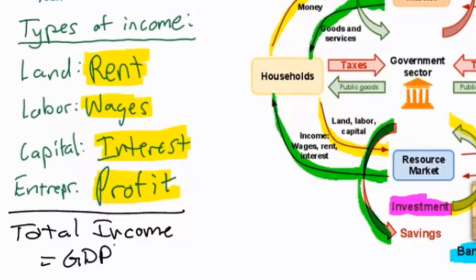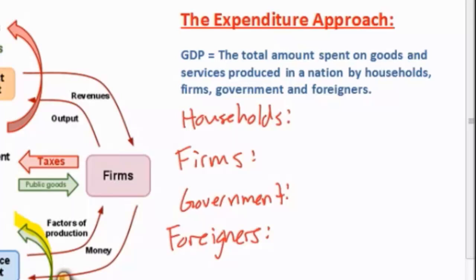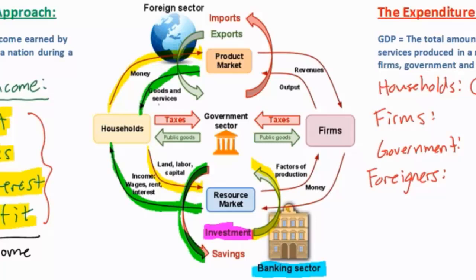Next, let's talk about the expenditure approach of measuring GDP. Expenditures is another word for spending. The expenditure approach sums the total amount spent on goods and services produced in the nation. Spending occurs by households, by firms, by the government, and by foreigners. When households spend money on goods and services, this is considered consumption, or capital C in our simplified equation. Consumption includes all spending by households on goods and services, and this money returns to firms in the product market.